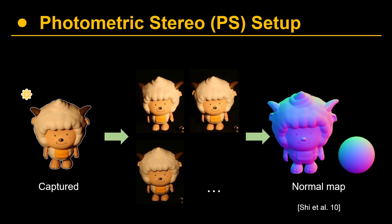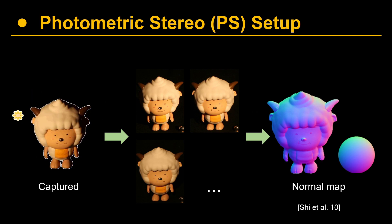In the Photometric Stereo setup, we have the object and the camera at a fixed location while changing the light. By capturing multiple images of the object under different lighting directions, we can estimate the surface normal map of this object.